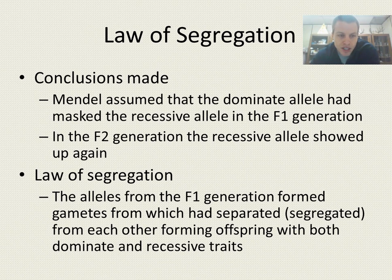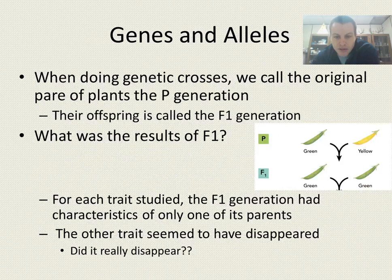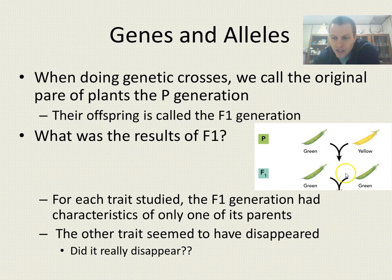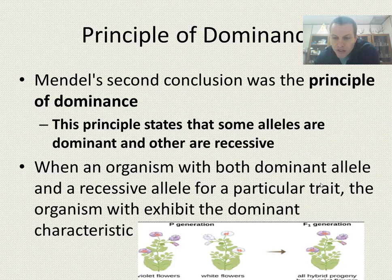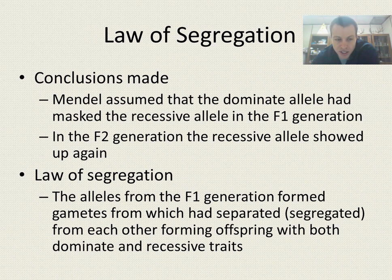Mendel concluded that the dominant allele had masked the recessive allele in the F1 generation. Since we crossed a green pod with a yellow pod and green was dominant, the F1 plants still had to carry genetic information from the yellow plant. So the F1 generation held some information from the yellow pod, but the green masked it — meaning we only saw green plants. In the F2 generation, the recessive allele showed back up, and this is where he concluded that the law of segregation had come into play.